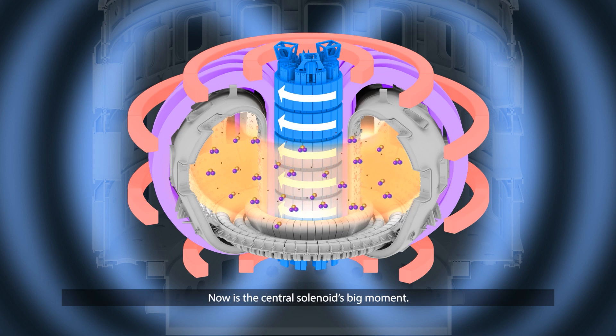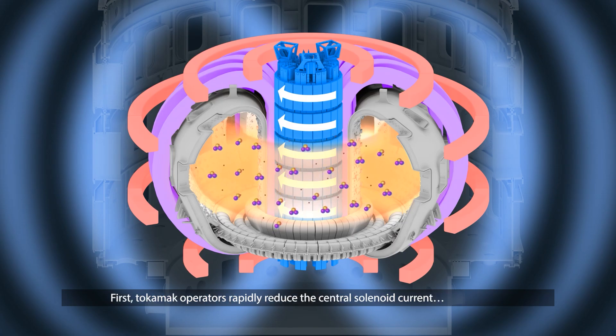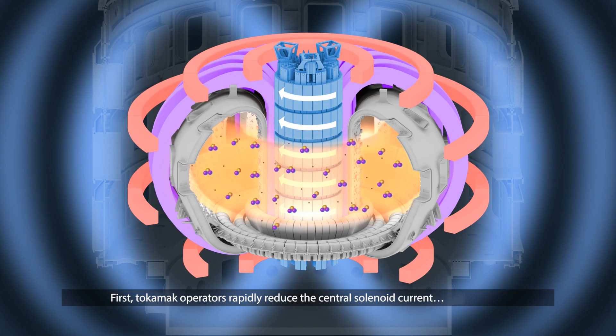Now is the central solenoid's big moment. A lot happens, quickly and simultaneously, but here we'll show one thing at a time. First, tokamak operators rapidly reduce the central solenoid current.